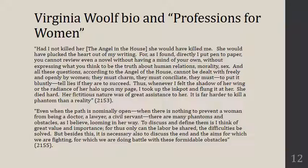All these questions, according to the Angel of the House, cannot be dealt with freely and openly by women — they must charm, they must conciliate, they must, to put it bluntly, tell lies if they are to succeed. She says she couldn't do that as a writer and had to try to get rid of The Angel of the House. But she says it is far harder to kill a phantom than a reality. The Angel in the House wasn't just one person telling Virginia Woolf what to write — it's a social norm. So everywhere Virginia Woolf looks, every new arena, there's The Angel in the House again, explaining what she can or can't write about, what she can or can't think. This is a really pervasive image.